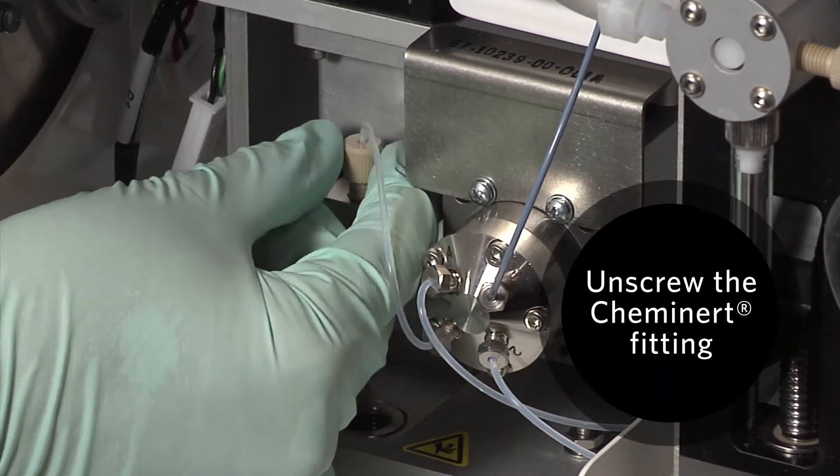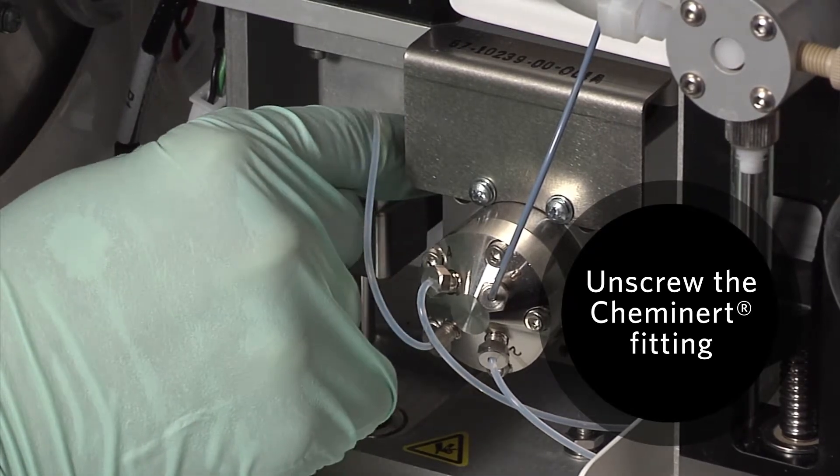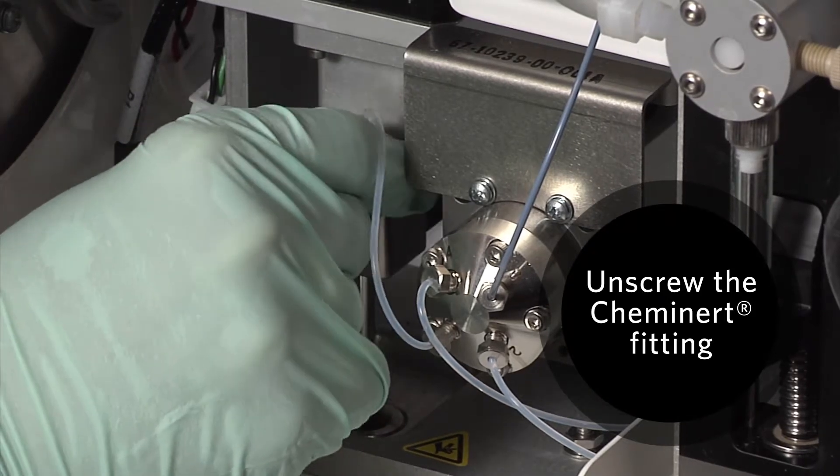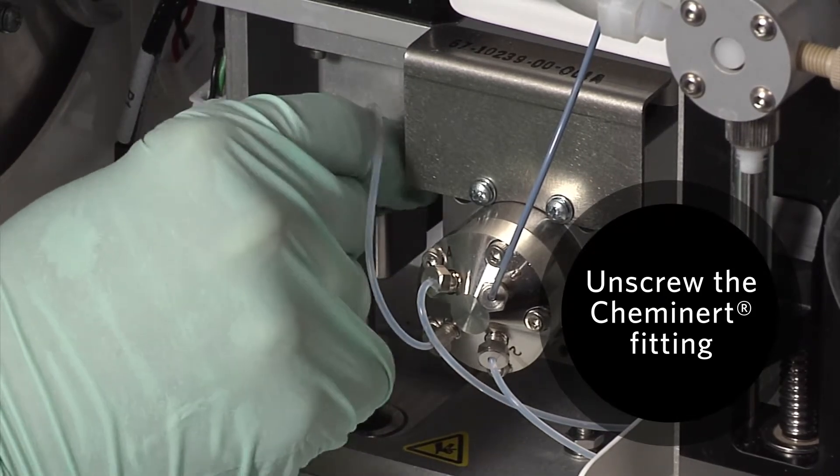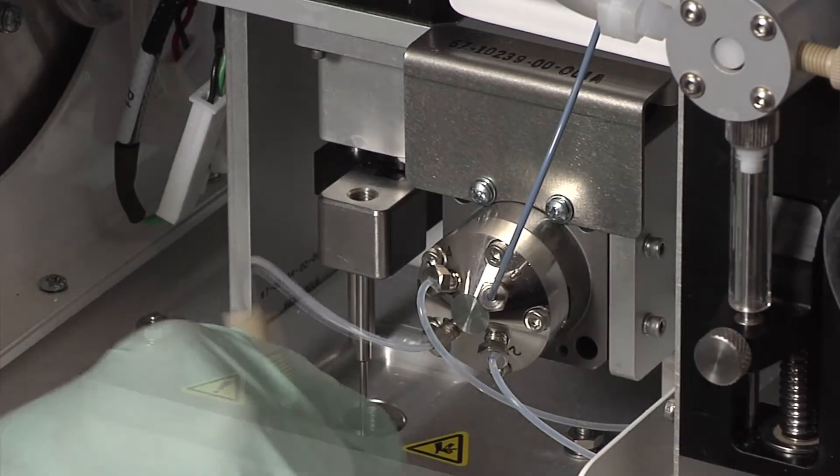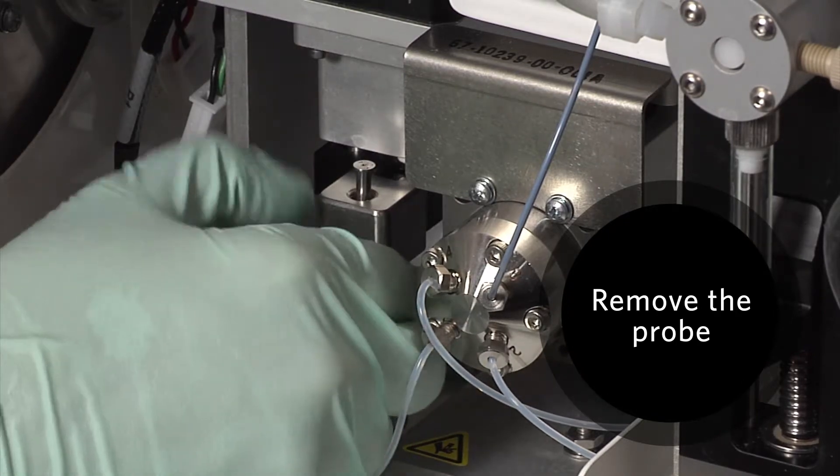Unscrew the Kim Inert fitting on the top of the probe until you can pull it away from the assembly. Gently grasp the probe and push it up and out the top of the probe holder.